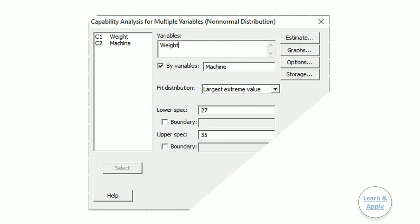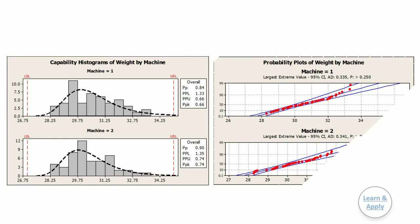Second, in Variables, enter Weight. Third, select By Variables and enter Machine. Fourth, from Fit Distribution, select Largest Extreme Value. Fifth, in Lower Specification, enter 27. Sixth, in Upper Specification, enter 35. And seventh, click OK to get the results. You will get the results of study in graph window.